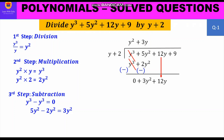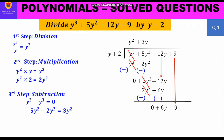Second step — multiplication: 3y × (y + 2) = 3y² + 6y, since 3y × y = 3y² and 3y × 2 = 6y. Third step — subtraction: change signs to −3y² and −6y. Then 3y² − 3y² = 0, and 12y − 6y = 6y. Bring down +9 to get the new dividend: 6y + 9.